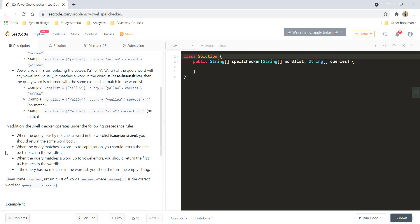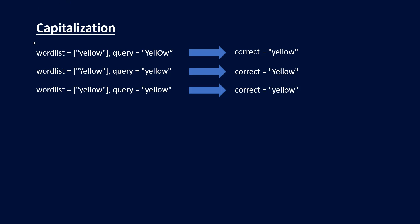Let's understand the cases in this question and then apply an approach to solve it. There are two types of errors: first is capitalization. You can see that the word list has the word 'yellow' and the query also has the word 'yellow', but the capitalization or case of the characters is different. So the correct word is the one in the word list, which is 'yellow' with all small cases. In another example, both words are same but only capitalization changes, and we return the word from the word list with a capital Y. In a third example, both words are the same and capitalization is also the same — an exact match — so we return the word from the word list.